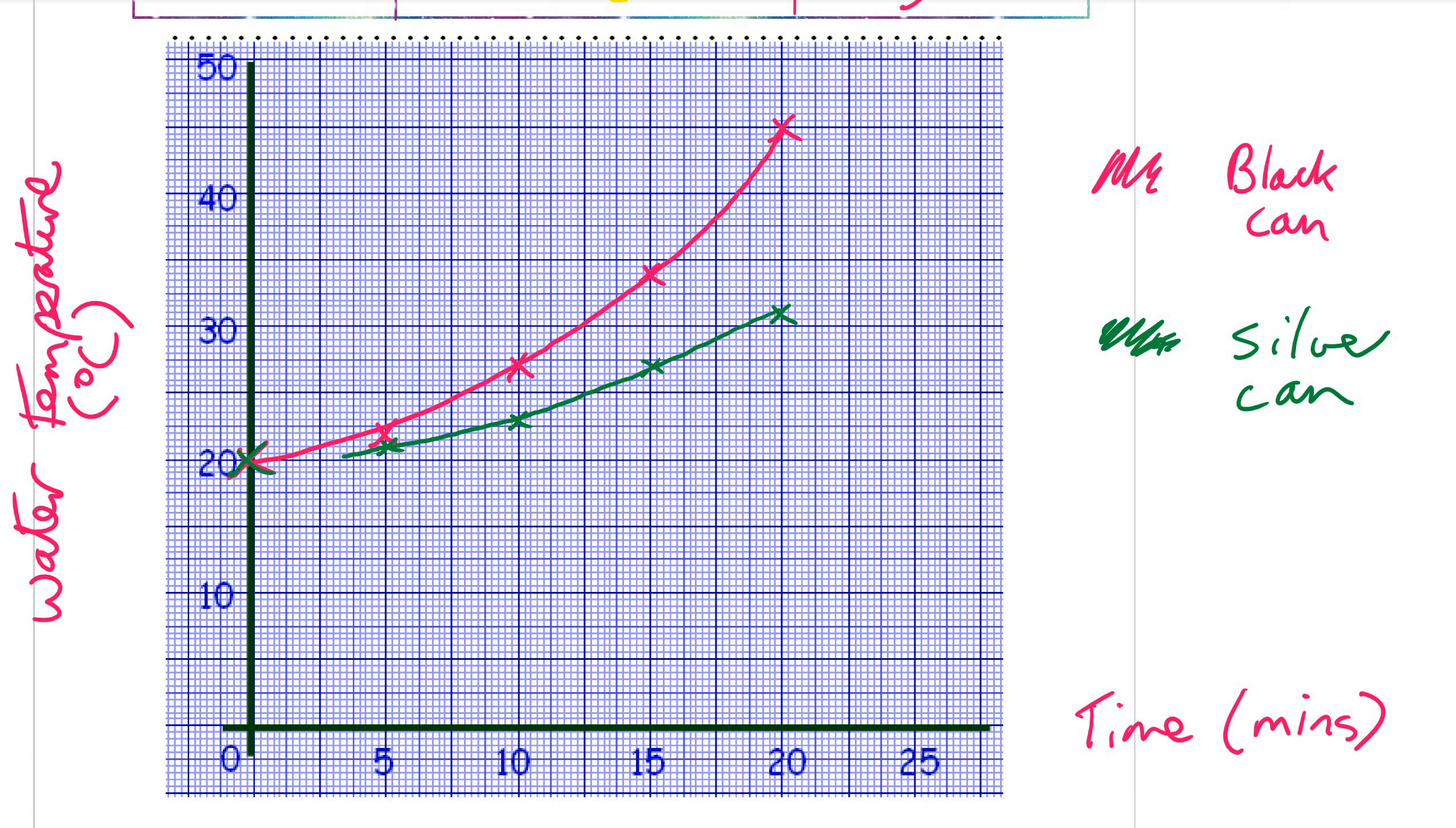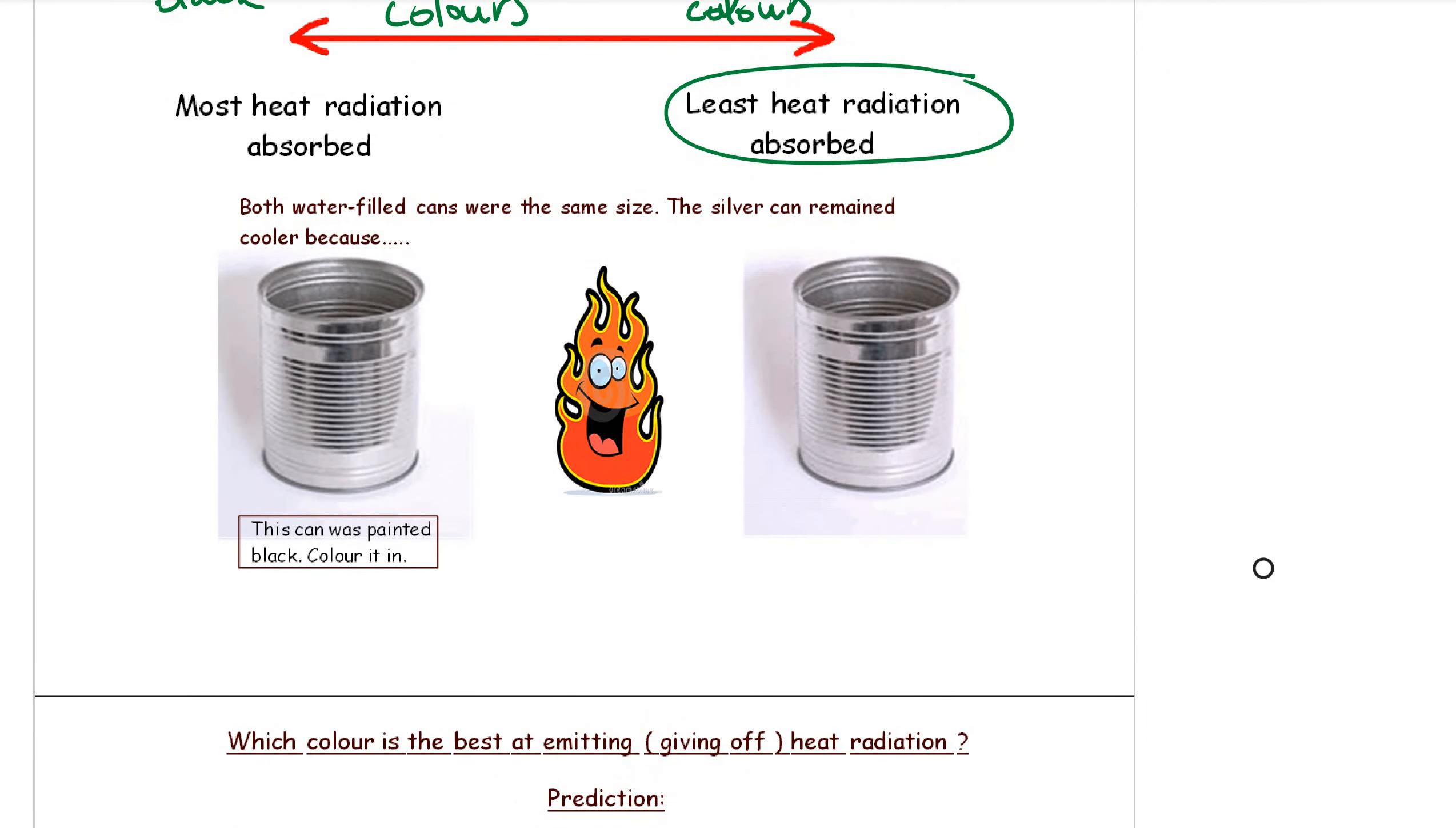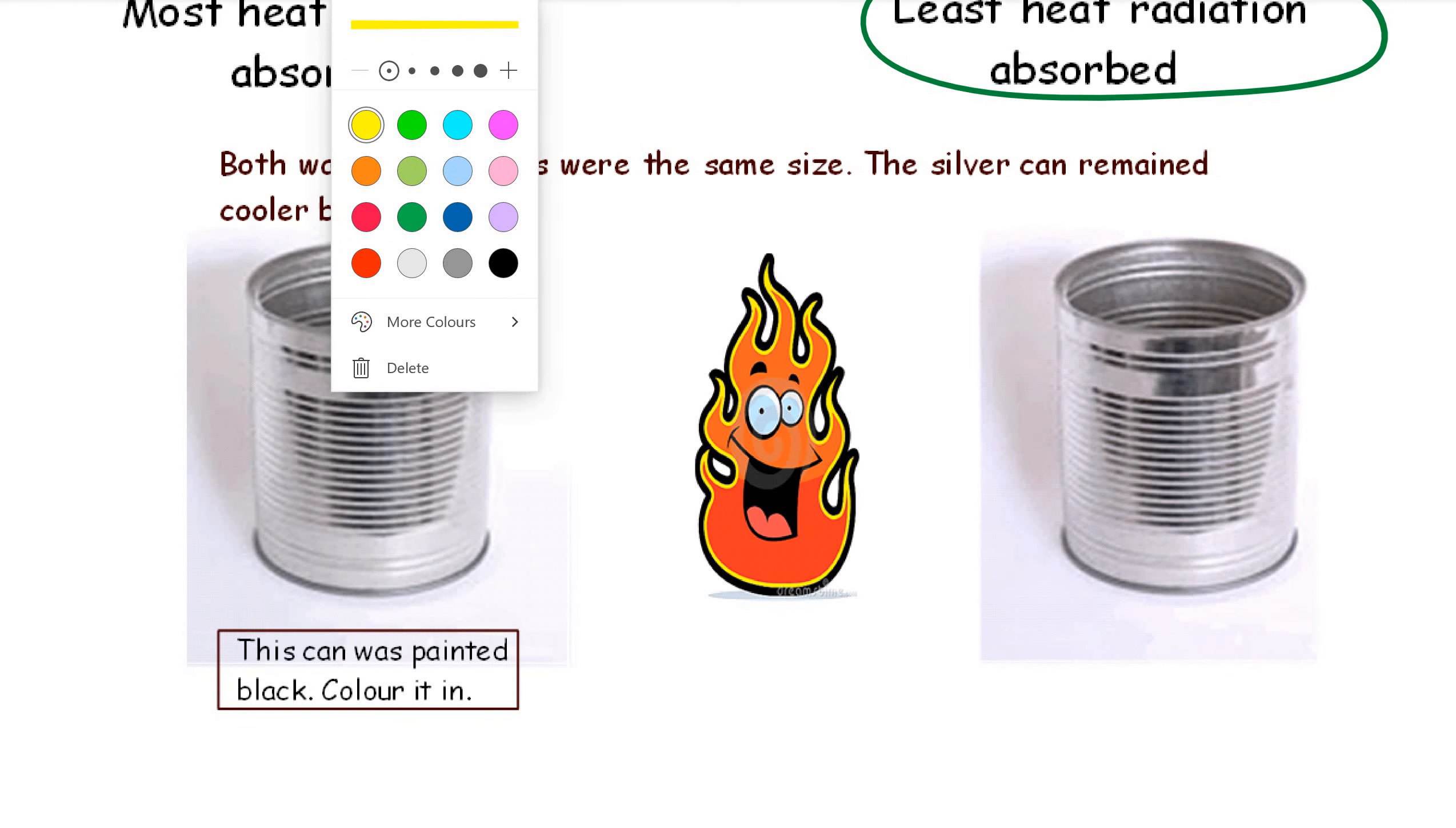Okay, well the conclusion: infrared heat radiation is absorbed best by the black can. In fact, black followed by dark colors followed by white, followed by silver is the worst at absorbing heat radiation.